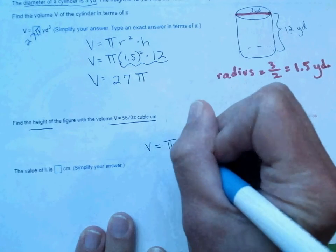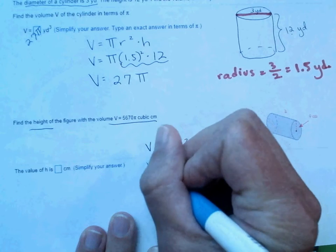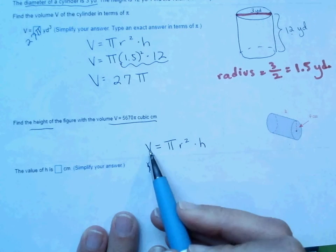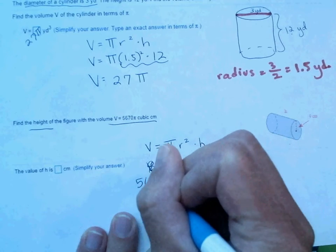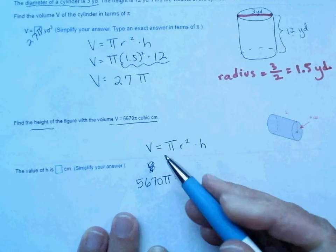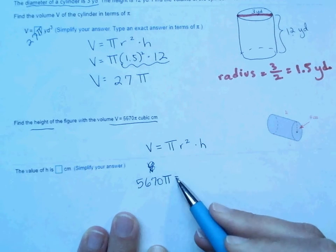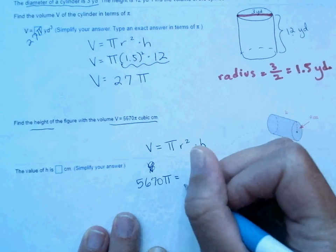Volume is equal to pi times radius squared times the height. So in for V, we're putting the volume, 5,670 pi. And then I'm going to follow my formula, bring down my equals, and then put a pi.